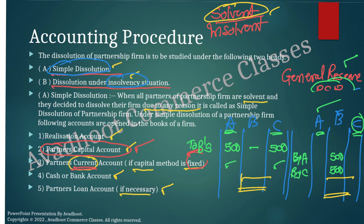For P&L account — if it is on the liability side of the balance sheet, write: profit and loss account debit to partner's capital account in their PSR — that is A's capital, B's capital, C's capital. If it is on the asset side, write: partner's capital account debit to P&L account. Calculate the profit or loss on realization, pass the entry, and from capital to cash or bank, pass the entry. If journal entries are asked, first prepare two to two-and-a-half pages of journal, then write working notes and prepare the accounts.